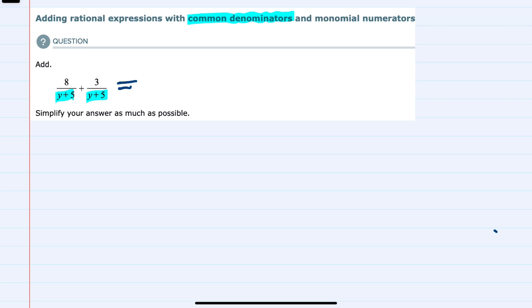once we get a common denominator, we keep that denominator. So after I add, my denominator will still be y plus 5.